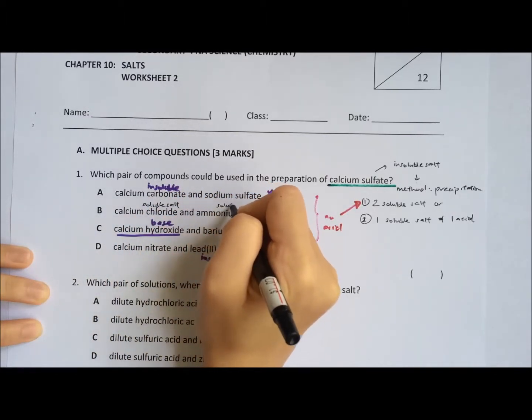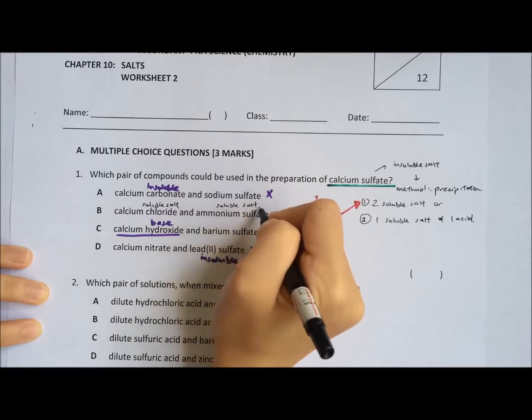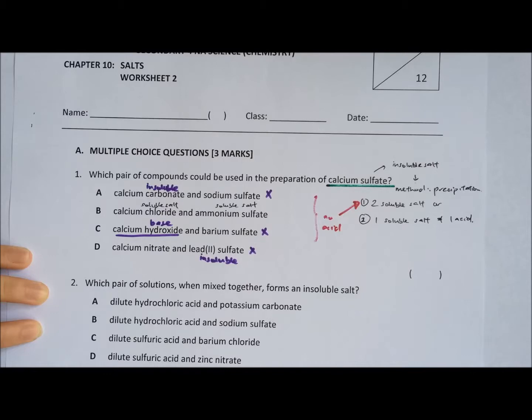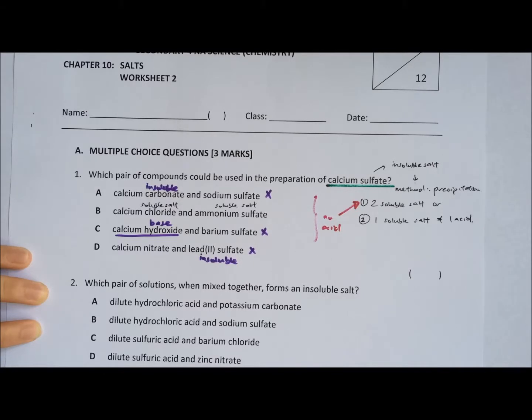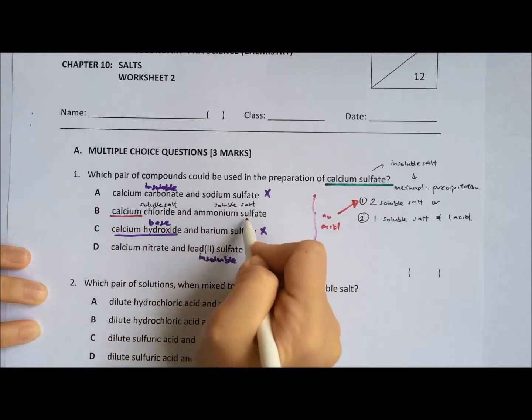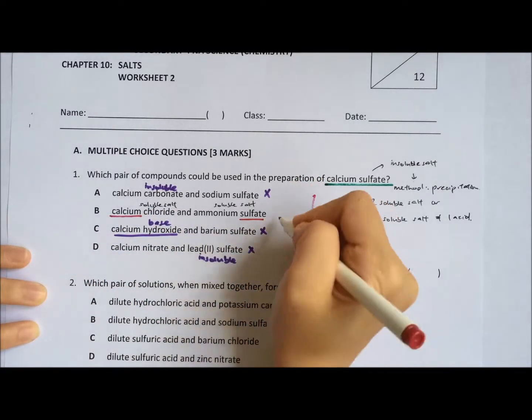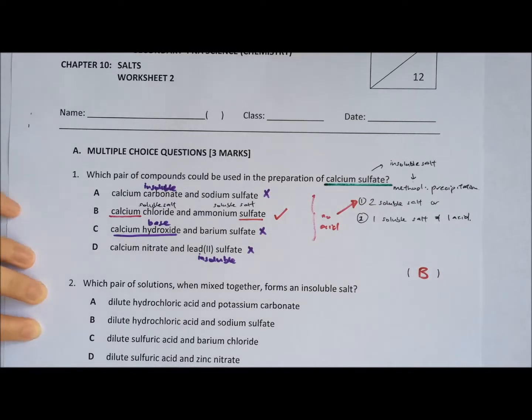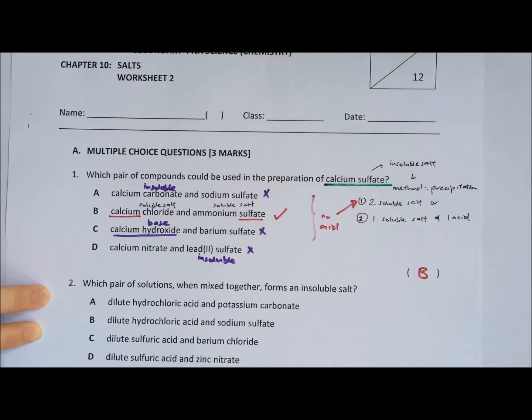Calcium chloride is a soluble salt. Ammonium sulphate is a soluble salt as well. And if you look at it, calcium chloride reacts with ammonium sulphate, you will get that calcium sulphate. So therefore, answer is B.